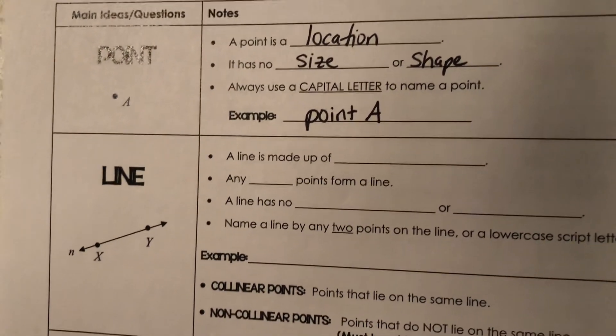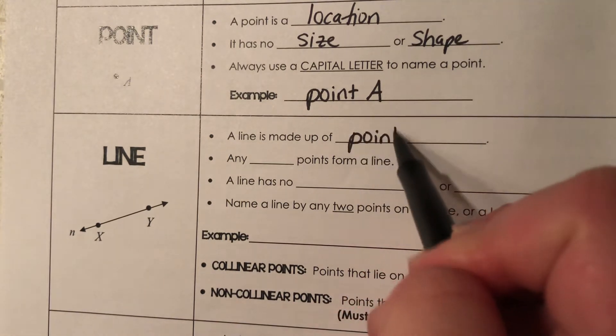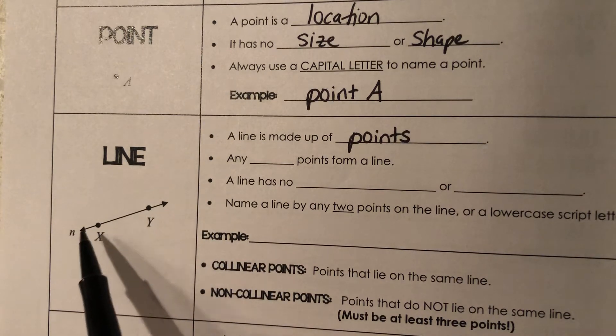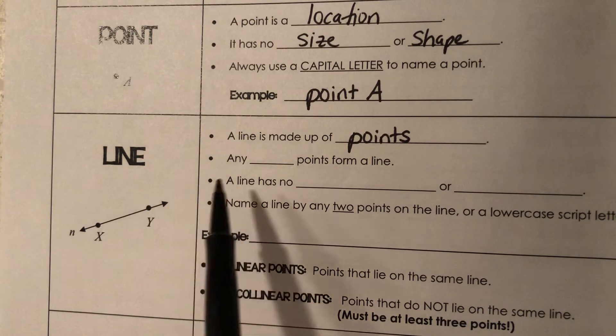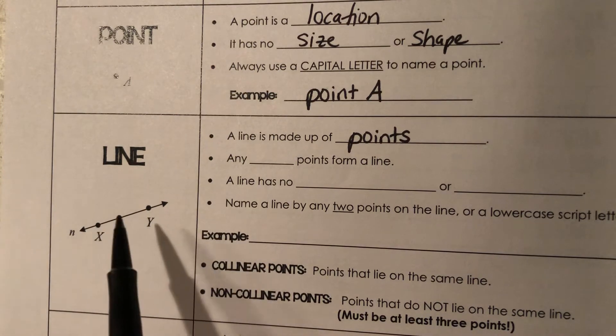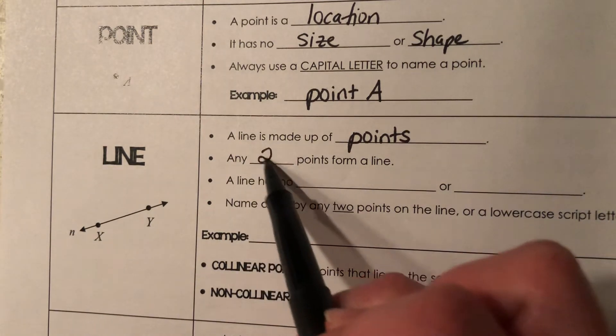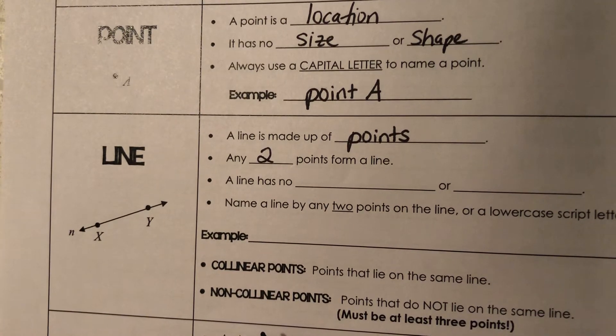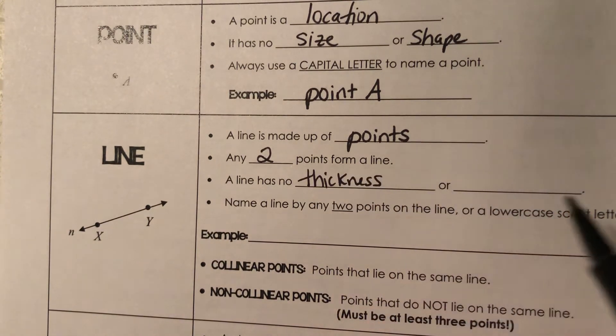So then once you have points, you can work on lines. A line is actually made up of points. It's an infinite amount of points that are all connected and they just keep going forever in two directions. So instead of drawing tons of little dots infinitely going, we just connect them all to make a line. And when you're trying to talk about points on the line, you usually only show two, maybe three at a time. You only need two points to form a line. So any two points can connect and make a line.